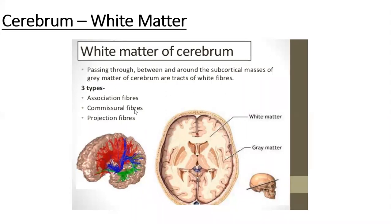Accordingly, they are divided into three types: commissural fibers, association fibers, and projection fibers. The nerve tract fibers that form the white matter of the cerebrum are grouped into these three categories. Now let's see what the different nerve tracts are that form these three categories and what parts of the brain they are connecting to each other.